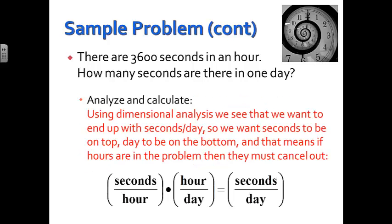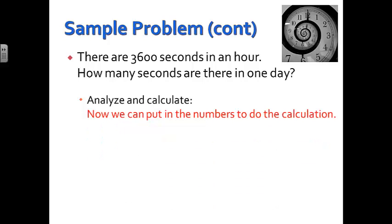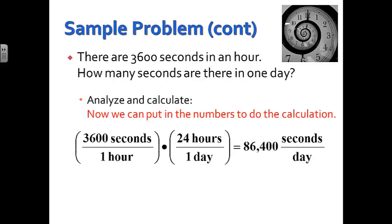Now we're ready to analyze and calculate. We're going to use that dimensional analysis so that we can see that we want to end up with seconds per day. That's what our answer needs to be in. So if we look at the other values we have, seconds per hour and hours per day, we can see that to get those units of seconds per day, we can multiply these values seconds over hours times hours over day. The hours will cancel, and you will then have your units that you want seconds per day. Now we can put in the numbers since we've figured out how we need to set it up to get the answer to work out. 3,600 seconds per hour times 24 hours per day is going to be 86,400 seconds in a day.